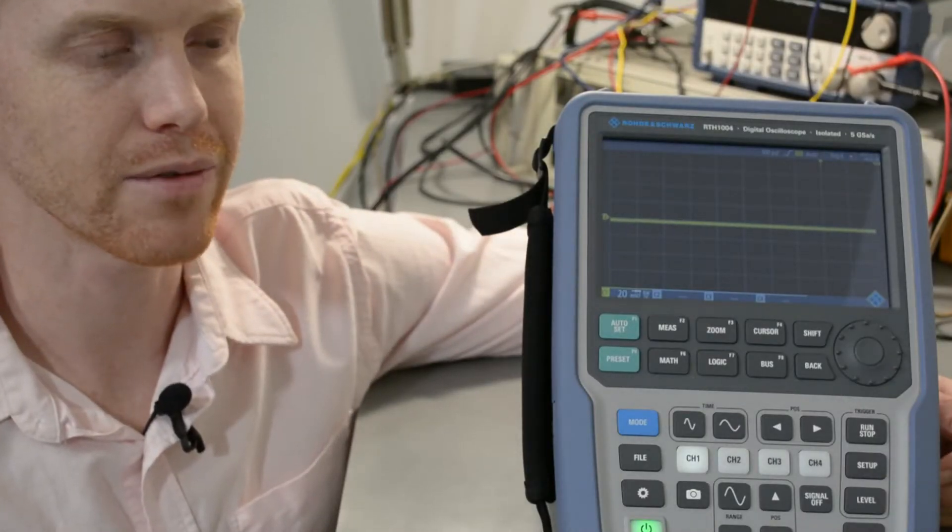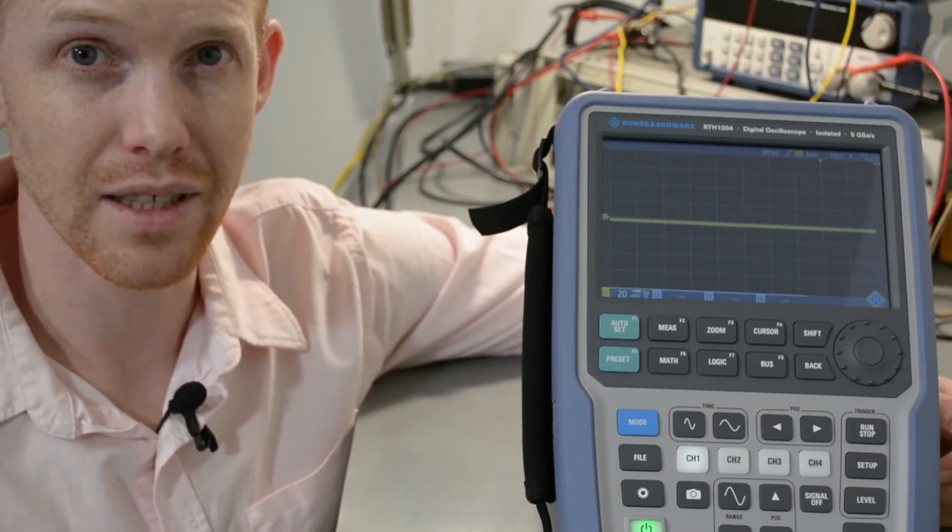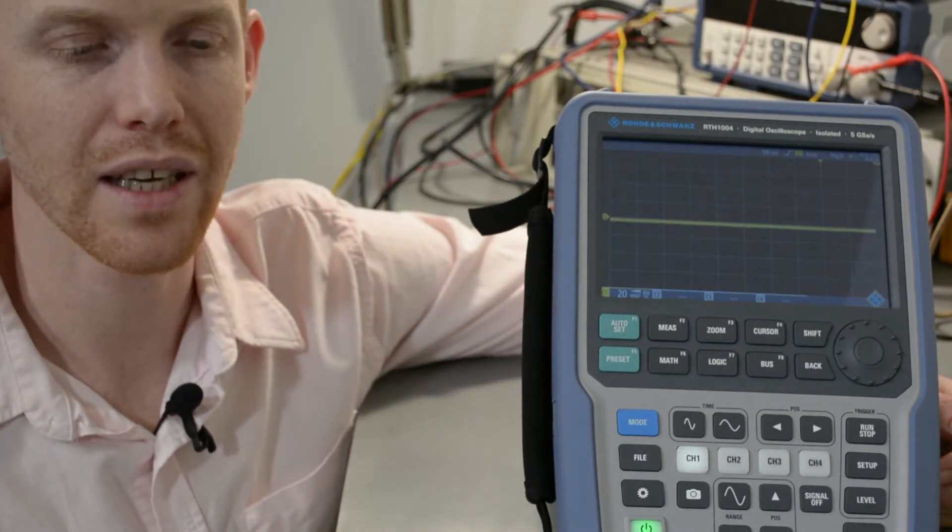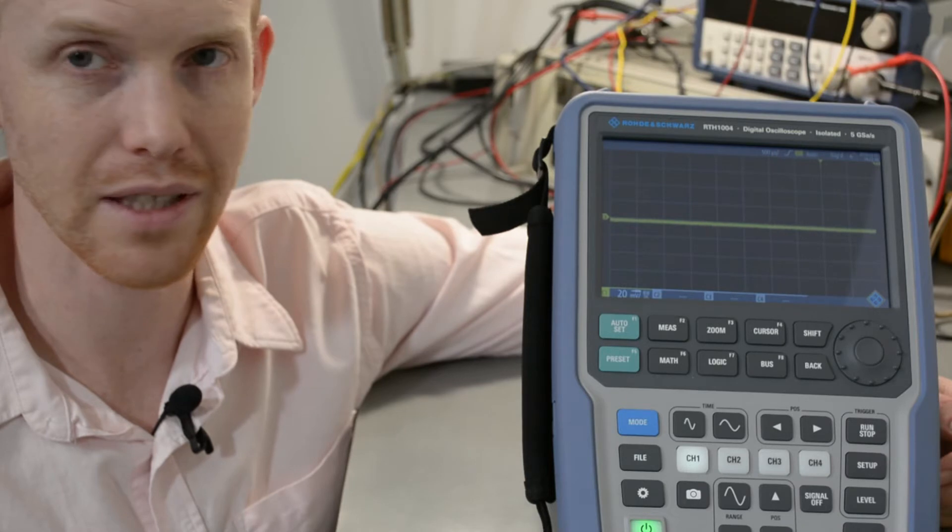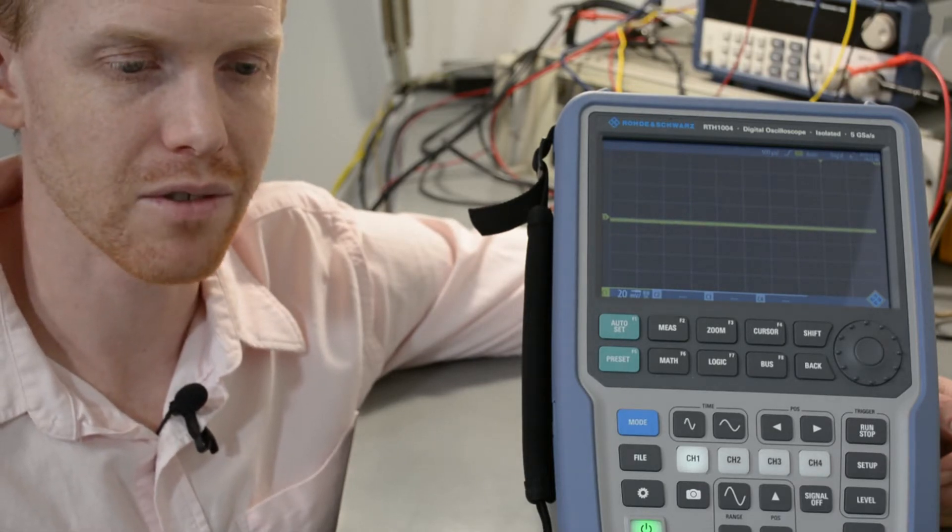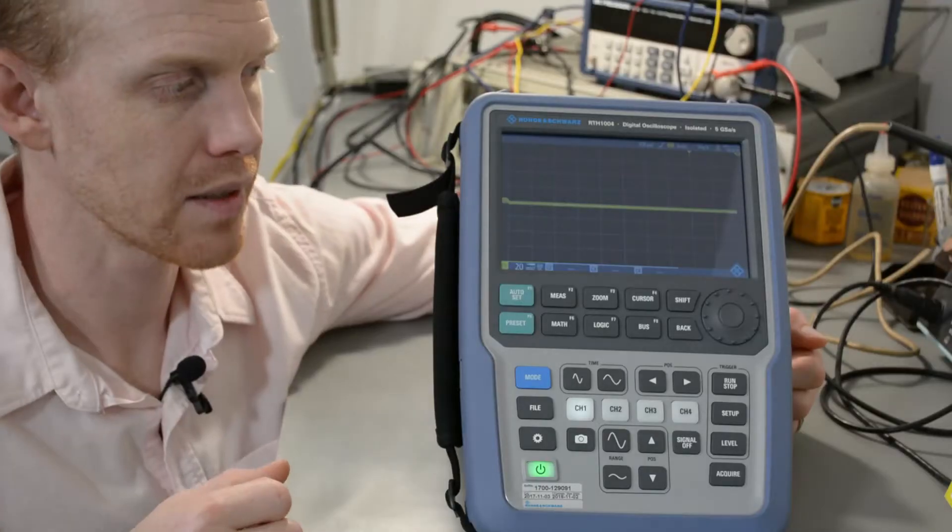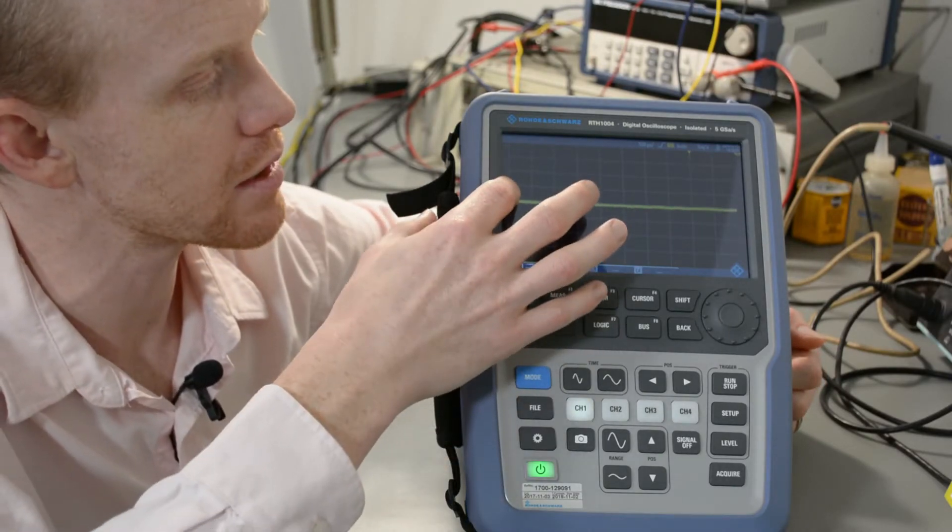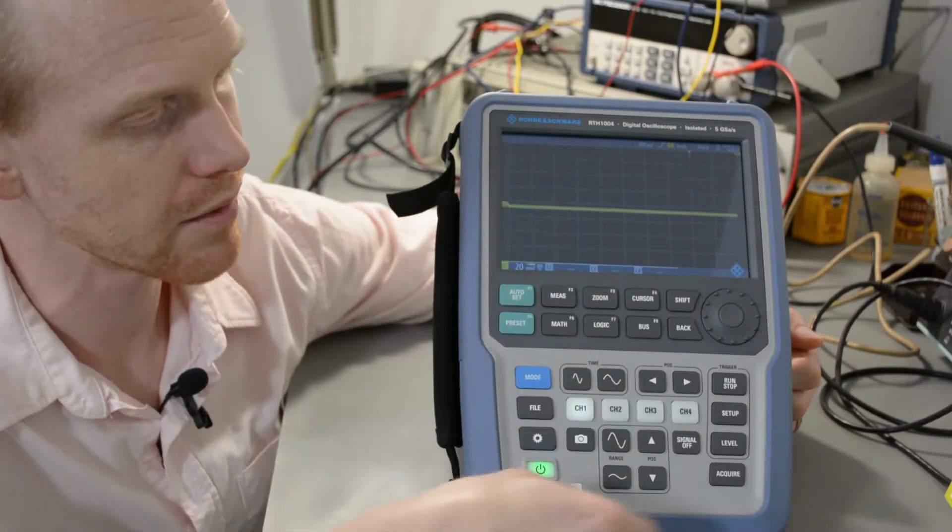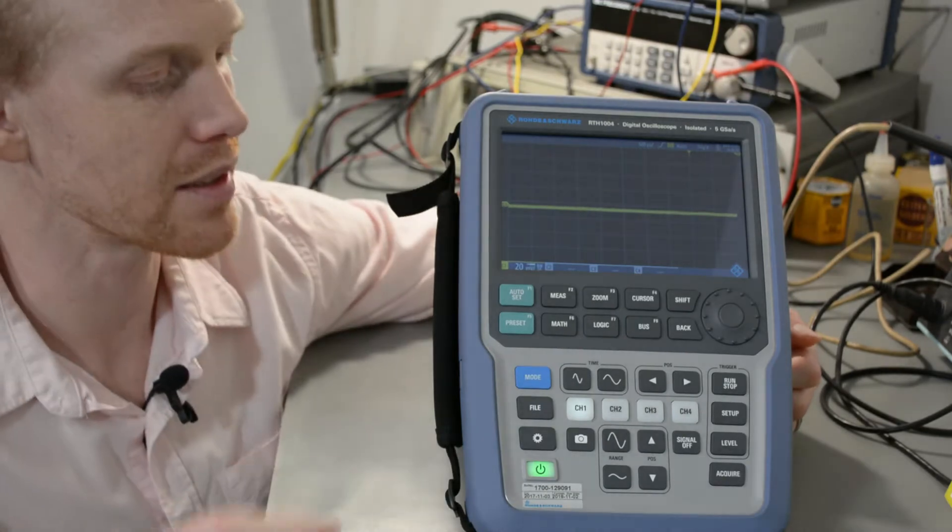So I got it off of eBay for $4,000, which is about half price, considering that it has the 500 MHz upgrade, and came with four of these scope probes. On the front, it has a nice 7-inch touch display and all of the standard buttons that you'd have on a scope.